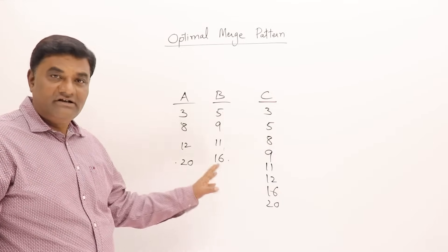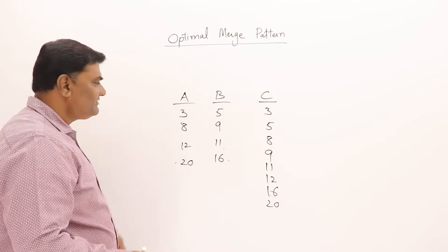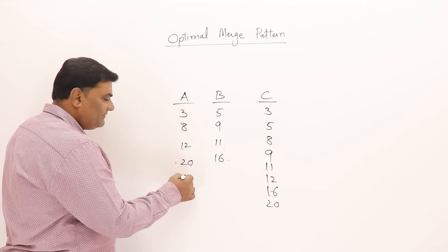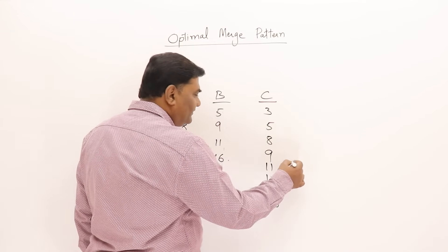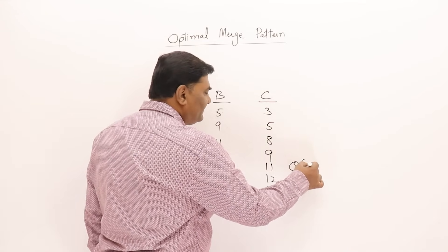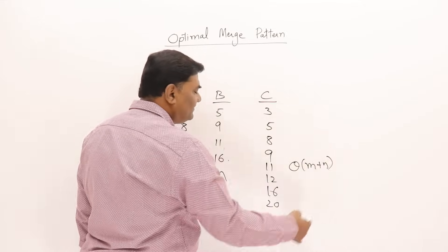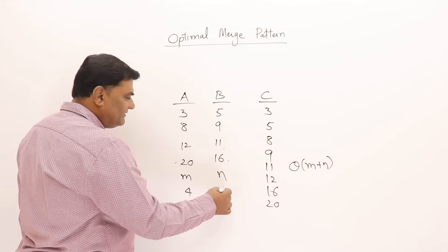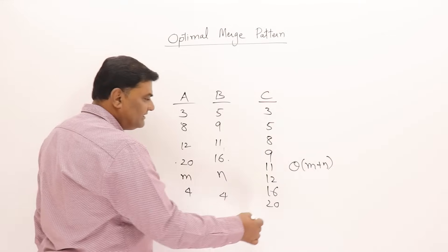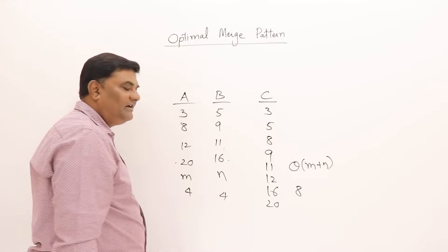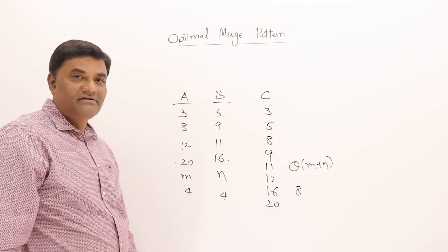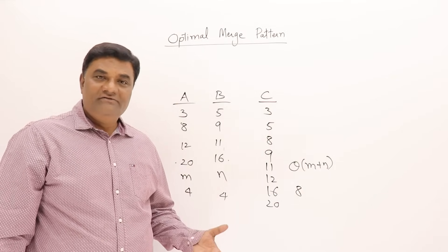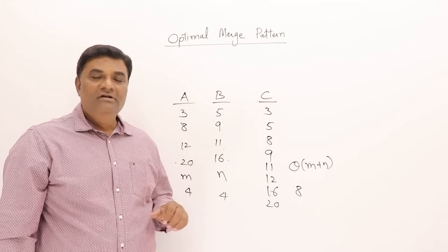Merging can be done only on sorted lists. How much time does it take? If this list is of size M and this one is of size N, then the total time is M plus N. Four elements and four elements gives eight elements, so the total time taken depends on the size of the lists.